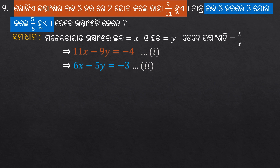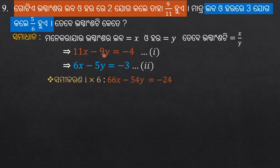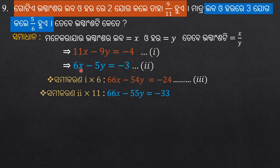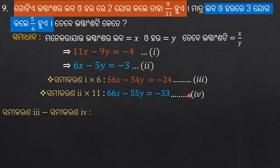Now we have a linear simultaneous equation. We will use the method of elimination to solve it. Multiplying equation 1 by 6: 66x minus 54y equals minus 24. Multiplying equation 2 by 11: 66x minus 55y equals minus 33.